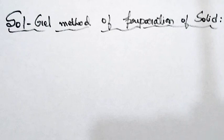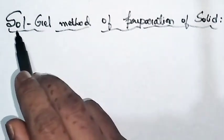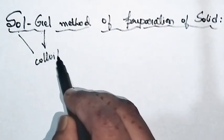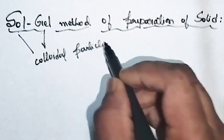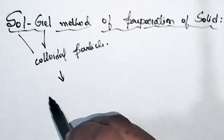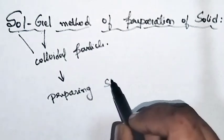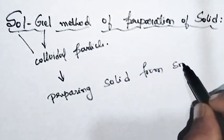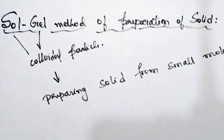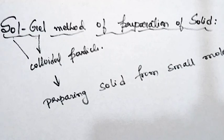In the sol-gel method, first we have to understand what is sol and what is gel. Sol and gel are nothing but colloidal particles. Sol is a colloidal particle, and gel is also a colloidal particle. In the sol-gel method, we are preparing the solid from small molecules or small particles — that is usually a colloid, that is sol. The preparation of solid from smaller molecules is why this is called the sol-gel method.